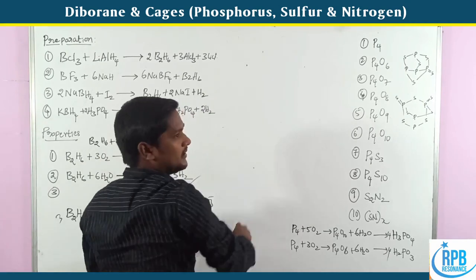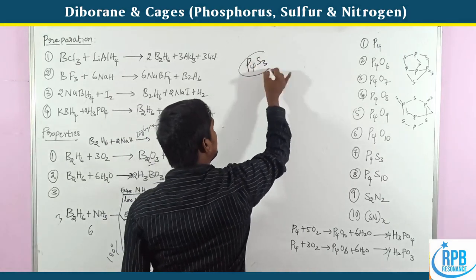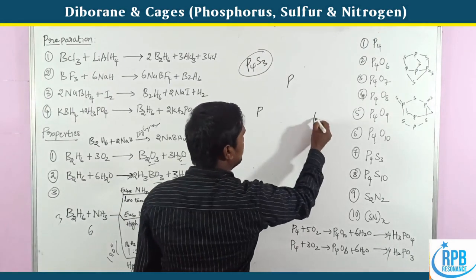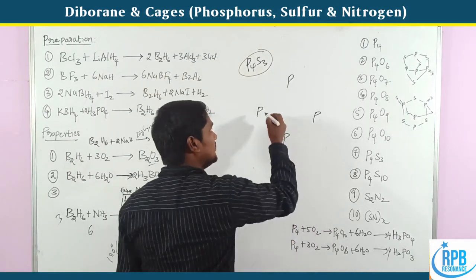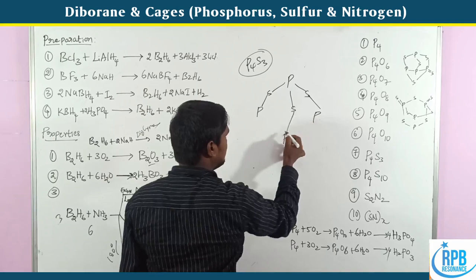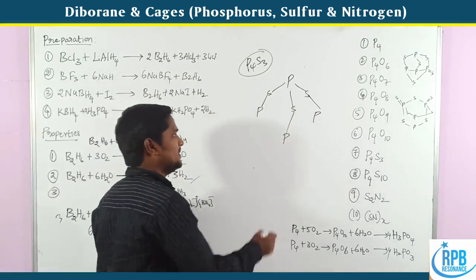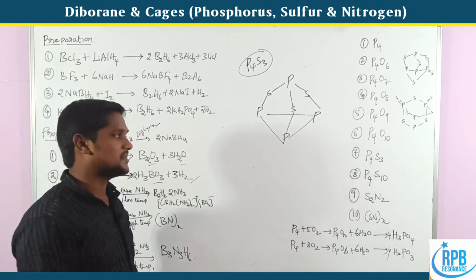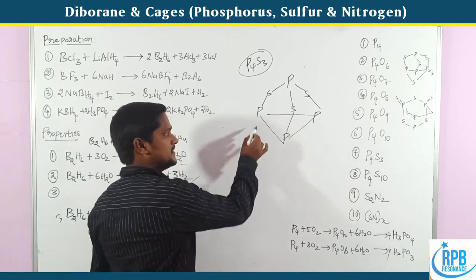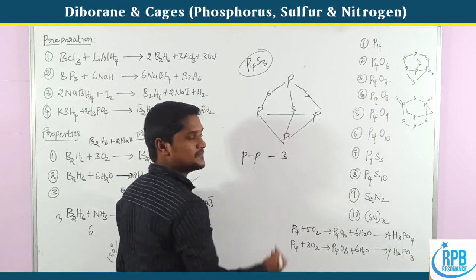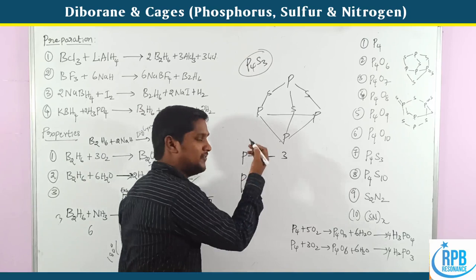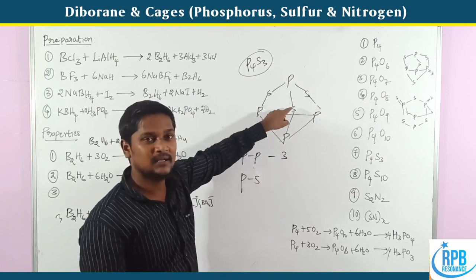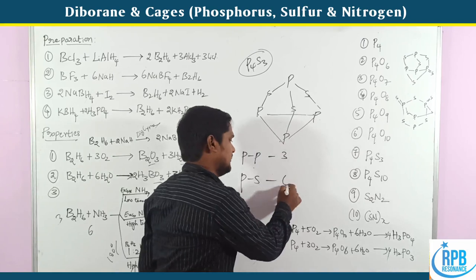Now for phosphorus sulfide structures: in P4S3, there are 3 P-P bonds and 6 P-S bonds. Any remaining P-P bonds: 1st, 2nd, 3rd — so 3 P-P bonds total. Phosphorus-sulfur bonds: counting gives 6 P-S bonds. This is the structure of P4S3.